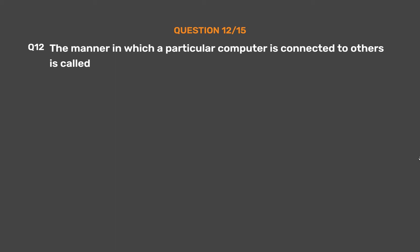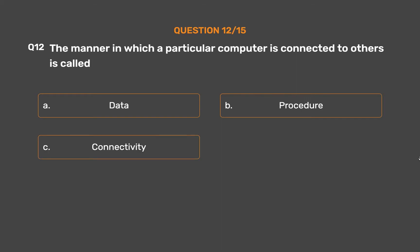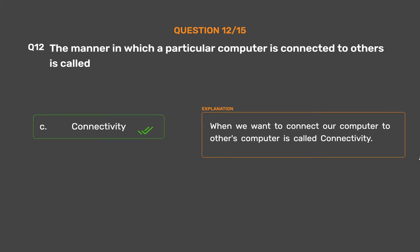Question No. 12. The manner in which a particular computer is connected to others is called. Option A: Data. Option B: Procedure. Option C: Connectivity. Option D: None. The correct answer is Option C — Connectivity. When we want to connect our computer to other computers, that is called connectivity.